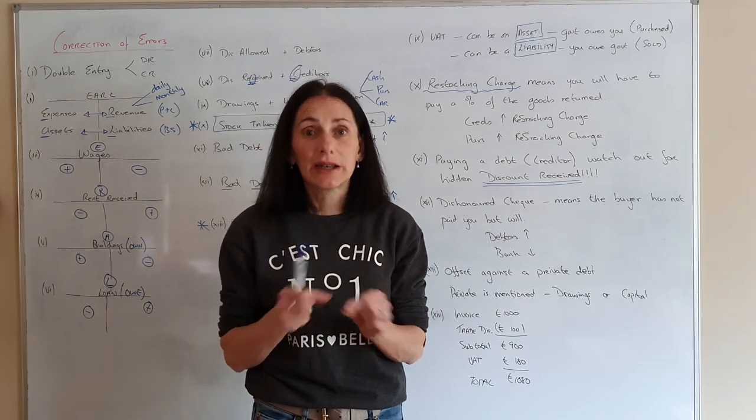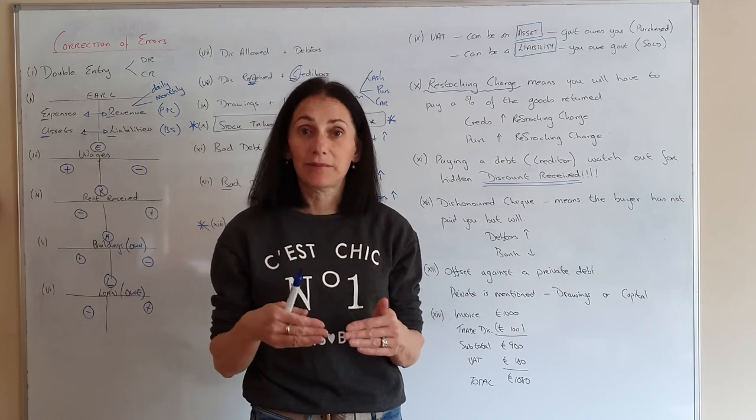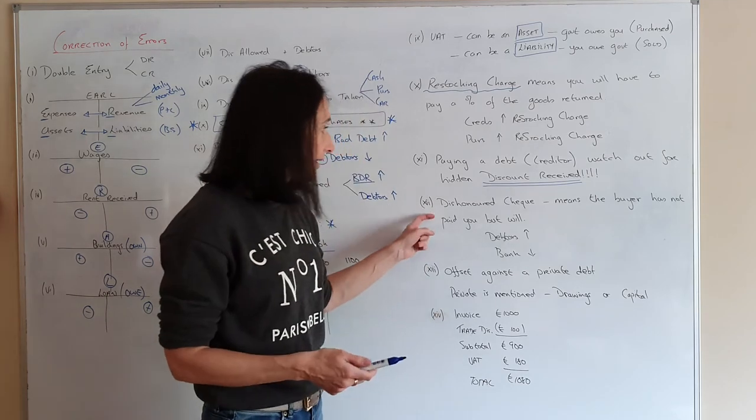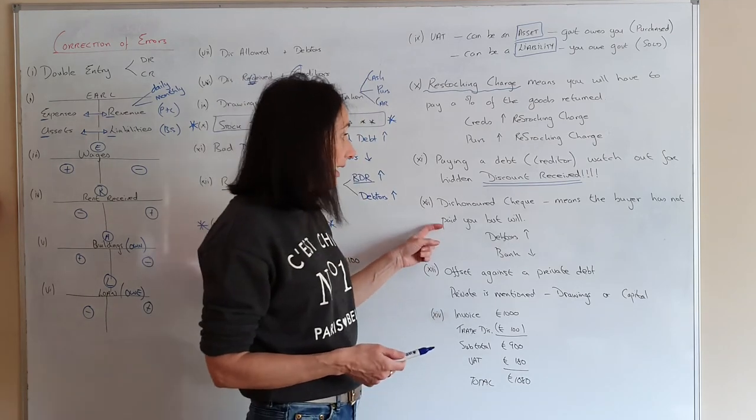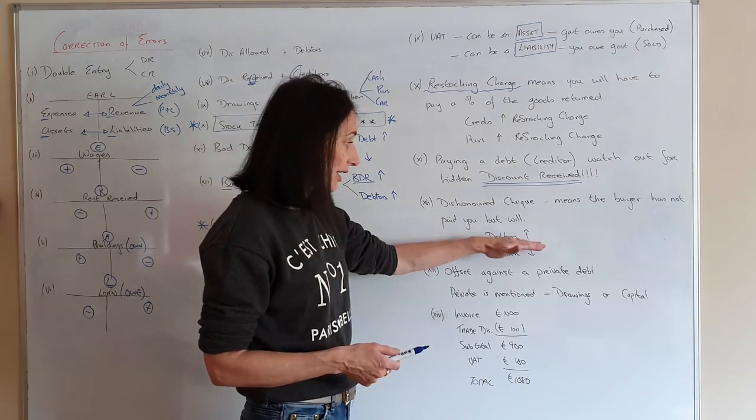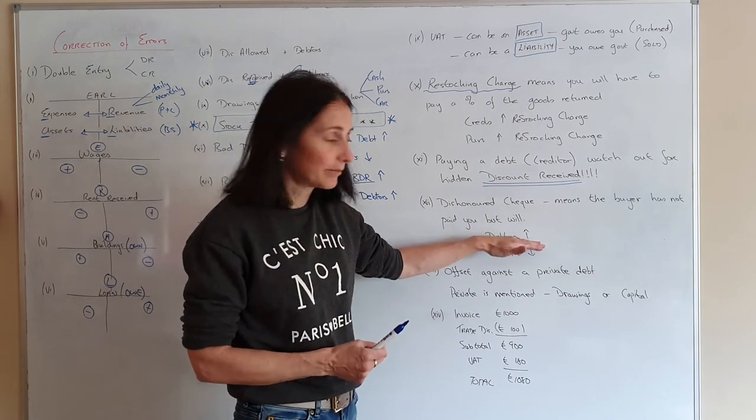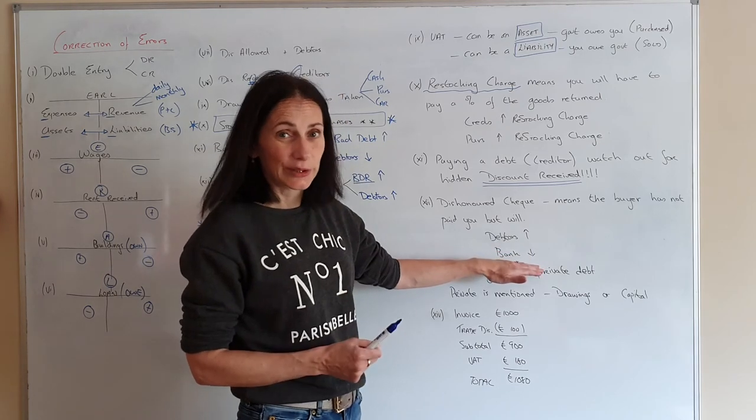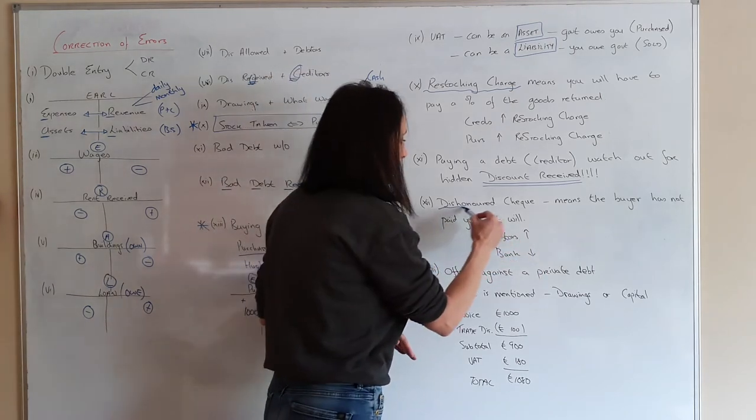It's just this time the cheque didn't work. So a dishonored cheque means the buyer has not paid you, but will. So you just need to put it back into your debtors to say they still owe you the money. And you need to show that the money didn't go into your bank. Okay. So just watch that one as well.